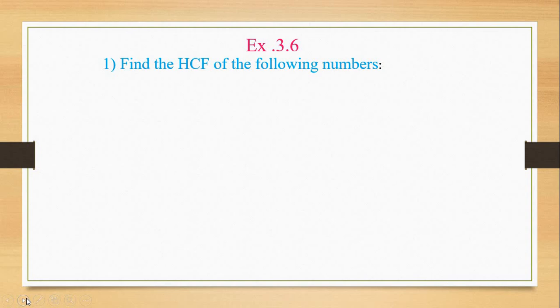First question has sub-questions from a to j. Let's begin with part a: two numbers 18 and 48. We have to find the HCF of 18 and 48. What is HCF? HCF means highest common factor, that is greatest common divisor. First, we have to find the factorization of 18 and 48 separately.